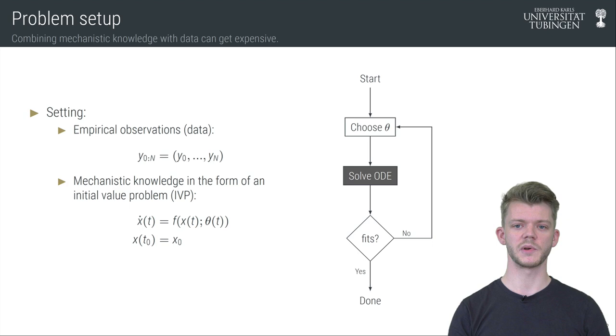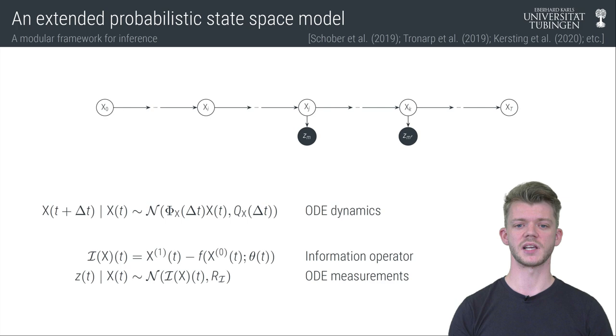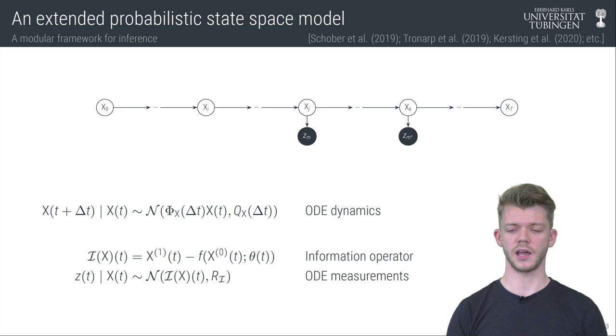Our paper shows that acknowledging that computation can be phrased as probabilistic inference sheds light into the black box numerical algorithms and renders efficient synthesis of empirical and mechanistic knowledge possible. This graphical model represents a probabilistic ODE solver, which was established by Tronab et al., Schubert et al., and others. The process X models the dynamics of the ODE solution and its derivatives via linear Gaussian transitions. Z are observations of the deviation between the model derivative and the vector field evaluated at the solution model. The key point of all of this is that computation is phrased as Bayesian inference.